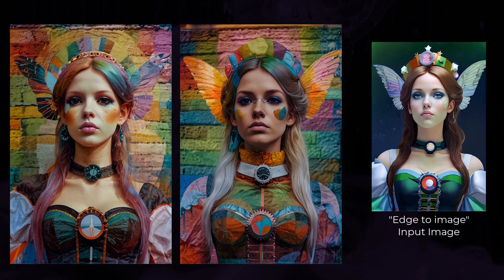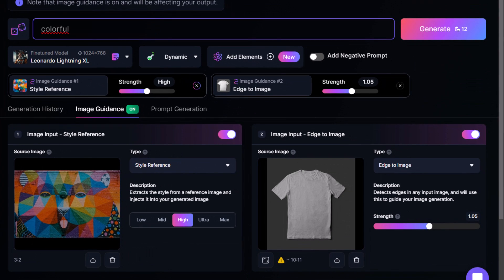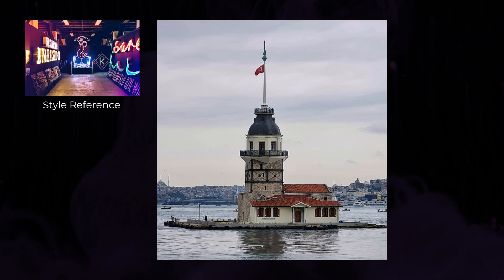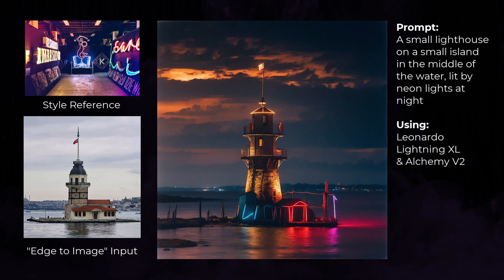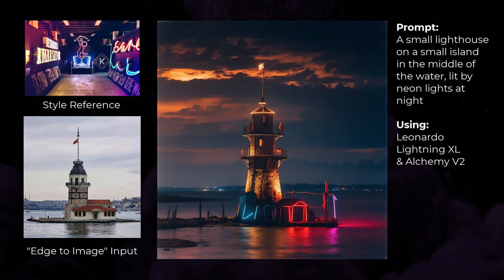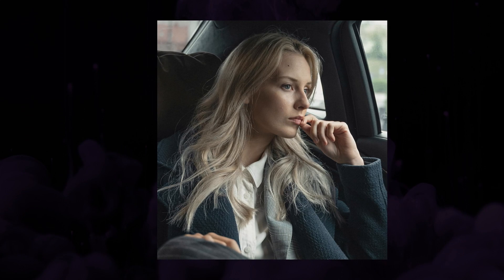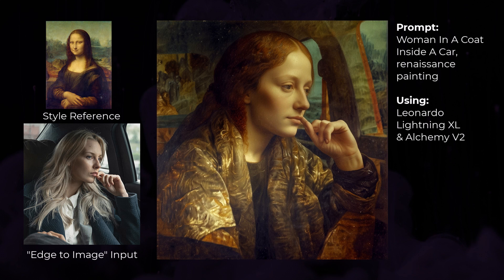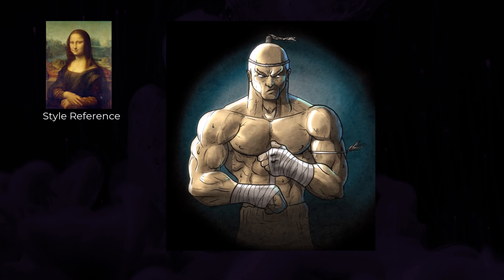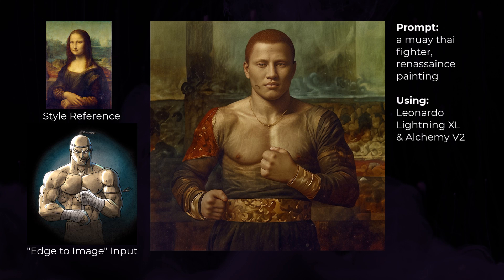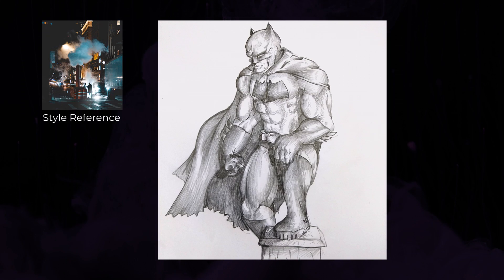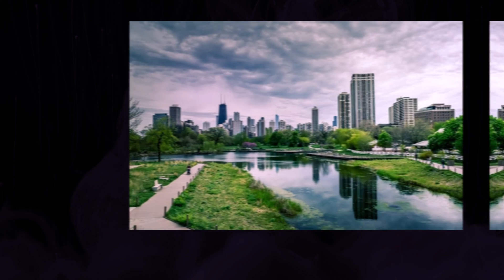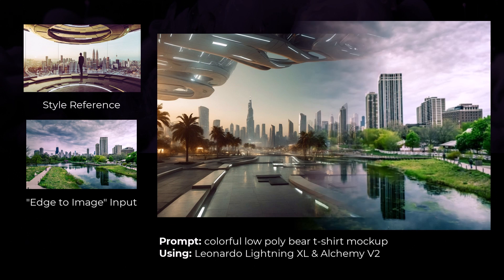A few more examples: using Edge to Image with a blank t-shirt you can create mock-ups; exchanging a photograph and applying a style gets cool results too. Here we've applied a neon style to a building with great results. You can upload a photo and apply art styles such as chalk, drawing style, or even convert it into a Renaissance painting. I also tried this with my own artwork — my Muay Thai guy — and got an interesting result, plus trying it with Batman and a cityscape photograph, which I found truly impressive. You can also use Depth to Image, combining a city photo with a 3D render to create a futuristic city with the same layout as the photo.